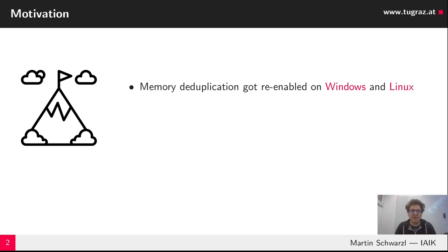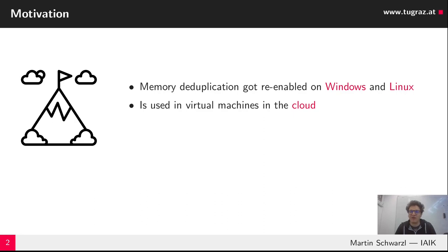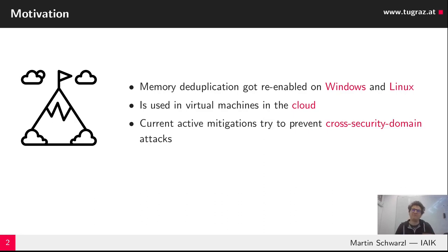Memory deduplication was re-enabled on Linux and Windows after several attacks were demonstrated — covert channels, Rowhammer attacks, and byte-by-byte password leakage attacks on NGINX — but all of them were demonstrated in a cross-domain environment. Typically it is used in virtual machines, and based on those attacks, active mitigations were put in place trying to prevent these kinds of attacks.